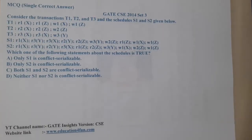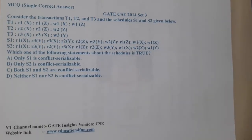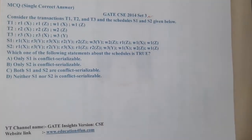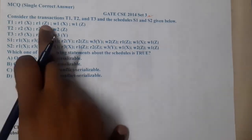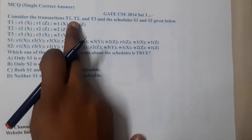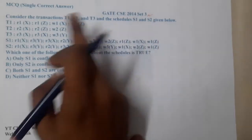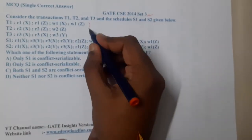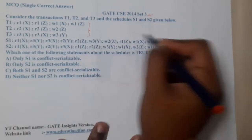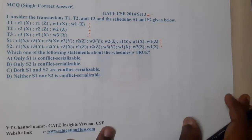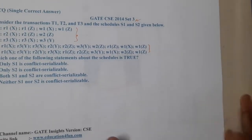Hello guys, welcome back to our next lecture. This question belongs to GATE CSC 2014 Set 3. The question asks us to consider transactions T1, T2, T3 and schedulers S1 and S2 given below. These three transactions have been converted into two schedules. This is based on conflict serializability, so let us start.